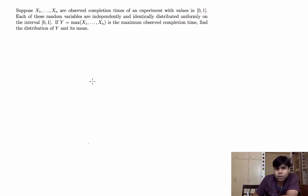Hi, in this video we'll learn how to solve the following problem. Suppose x1 to xn are iid uniform 0 to 1.